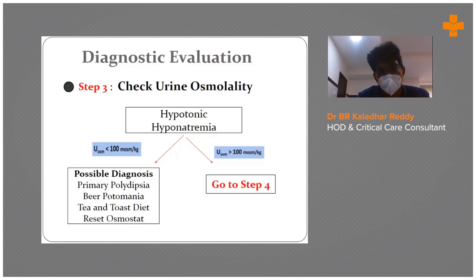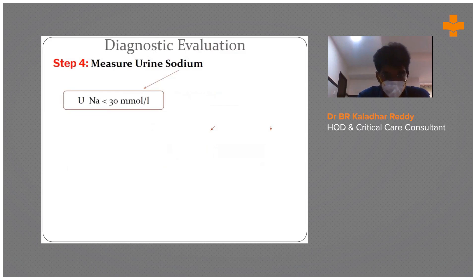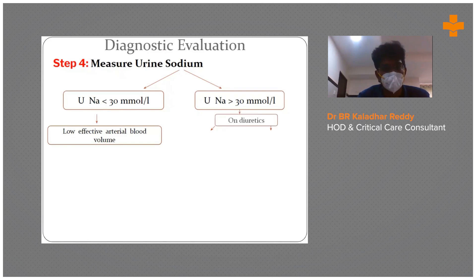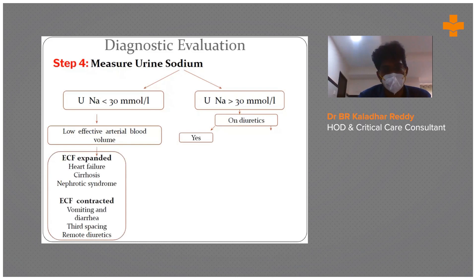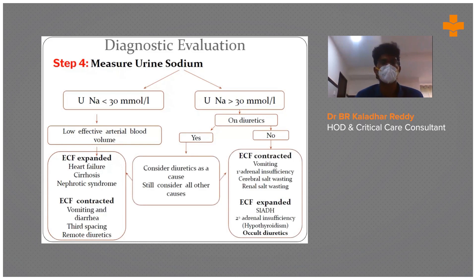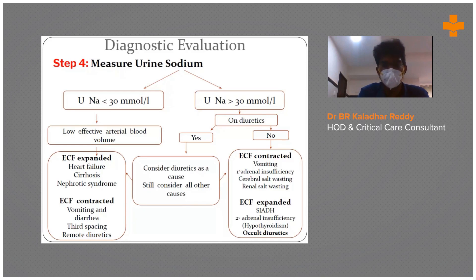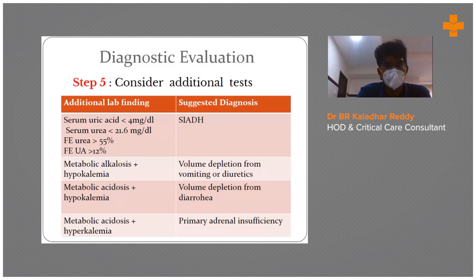If urine osmolality is more than 100, proceed to step four and measure urine sodium. If urine sodium is less than 30, this indicates low effective arterial blood volume — causes include heart failure, cirrhosis, vomiting, and diarrhea. If urine sodium is more than 30, consider renal causes or diuretic use.